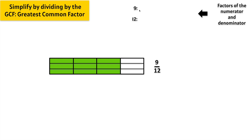Now let's find the factors that multiply to make 9. We know that 1 times 9 equals 9, 2 times no number will equal 9, and 3 times 3 equals 9. So 1, 3, and 9 are the only factors that will multiply to make 9.